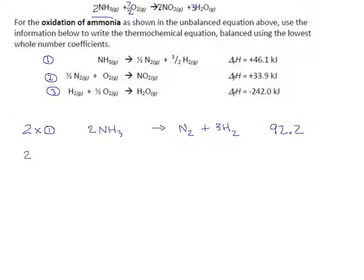So 2 times reaction 2 will give us, double this, you get 1 mole of nitrogen. Double this, 2 moles of oxygen. Arrow. 2 moles of nitrogen dioxide. And double this, that's 67.8.